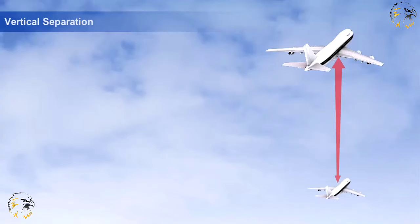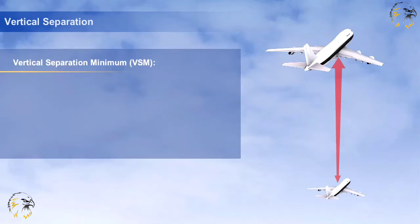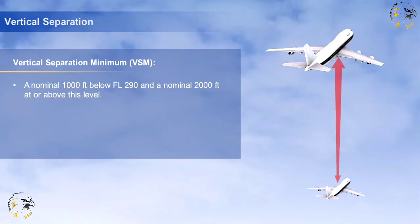Vertical separation is obtained by requiring aircraft using the same altimeter setting to fly at different levels expressed in terms of flight levels or altitudes. The vertical separation minimum is a nominal 1,000 feet below flight level 290 and a nominal 2,000 feet at or above this level.